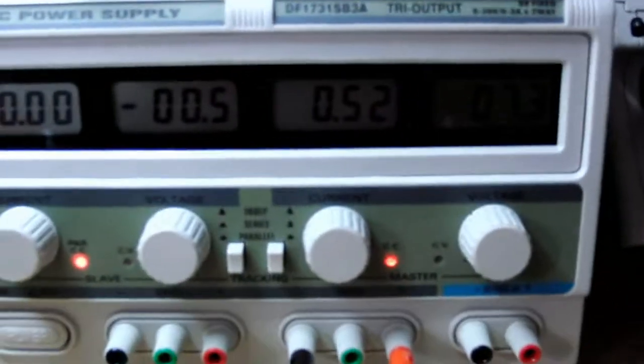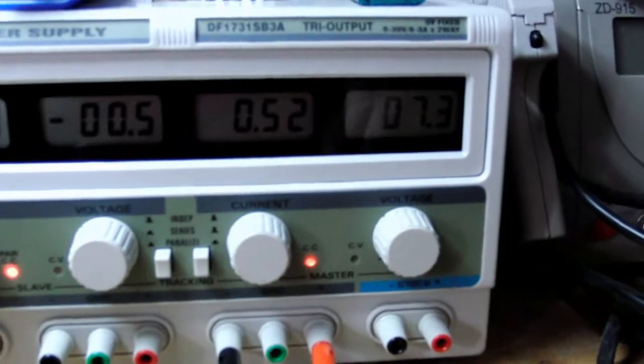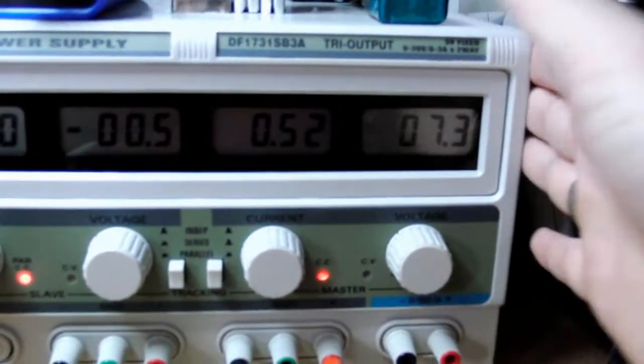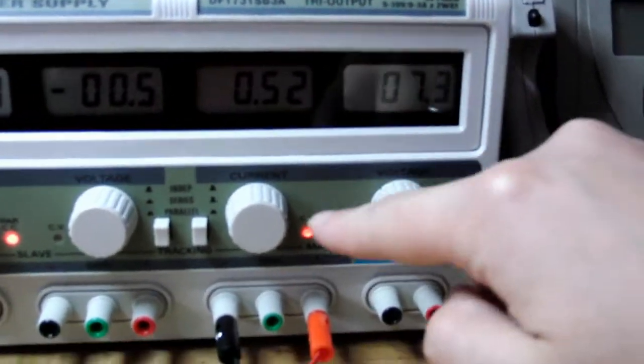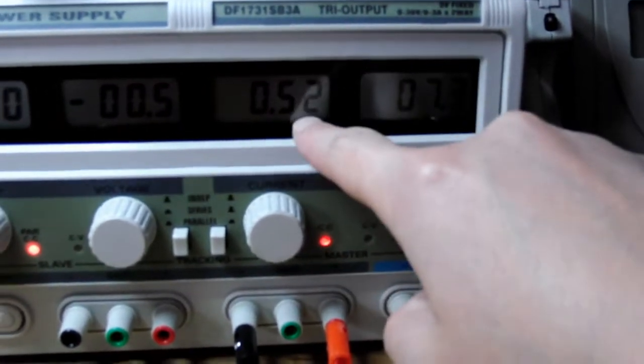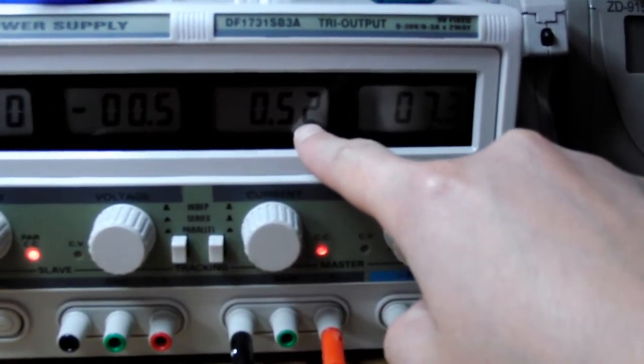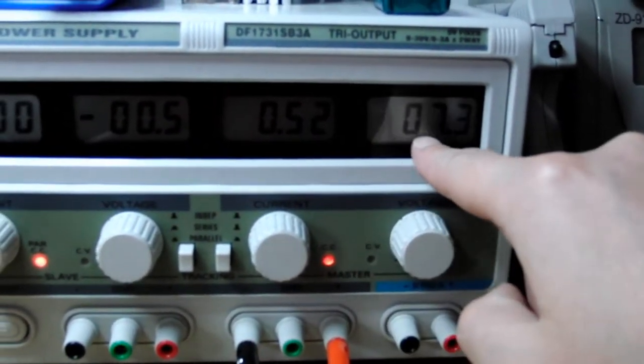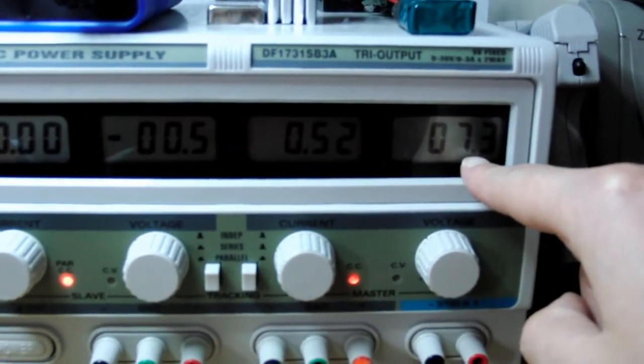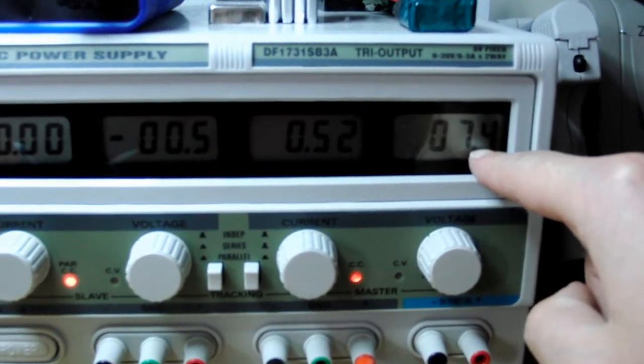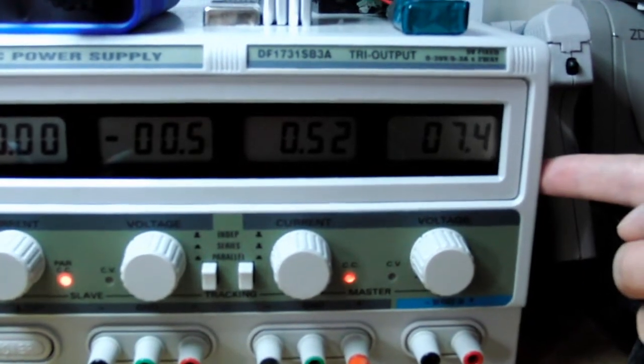As you see the power supply went into constant current mode supplying 500mA of charge current. And the cell voltage will rise up to 8.4V as it starts charging.